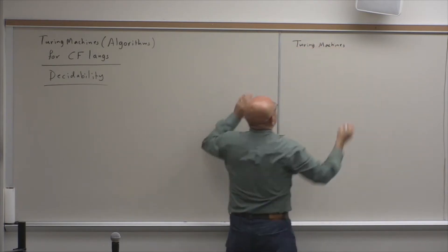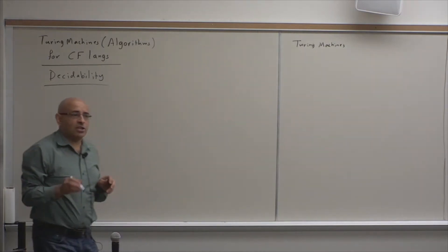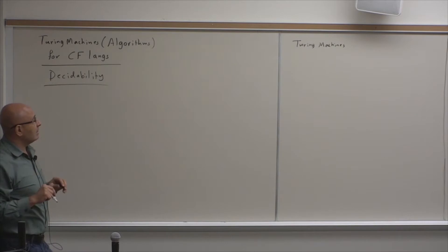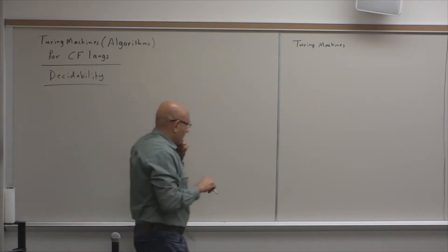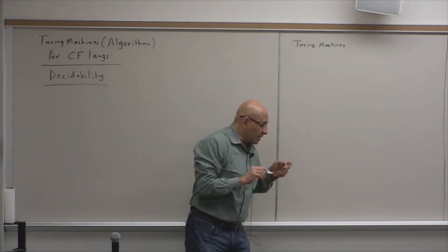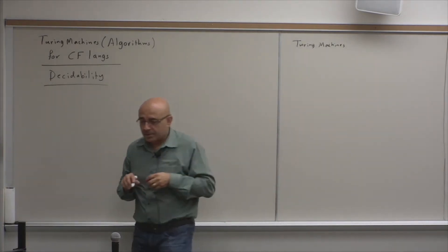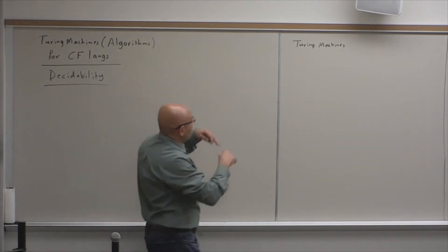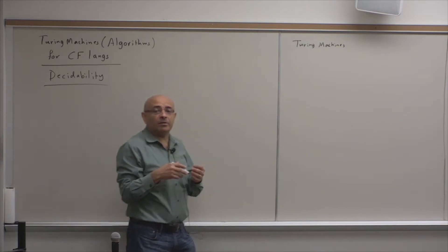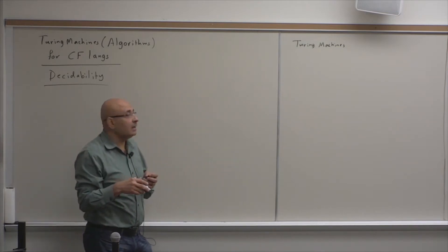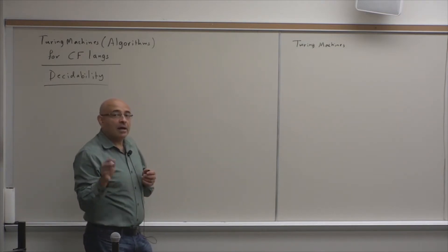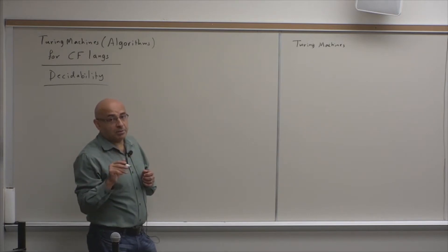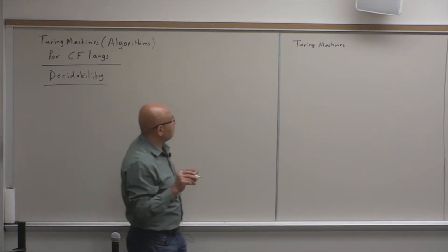We use Turing Machines and Algorithms interchangeably, because we assume that any algorithm can be implemented using a Turing Machine, or a Turing Machine is a theoretical model for any algorithm that you can implement and run on a general-purpose computer.